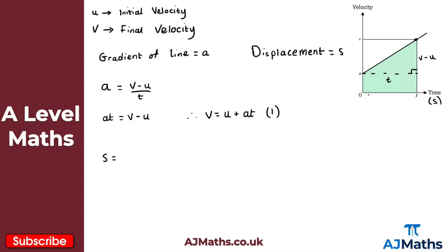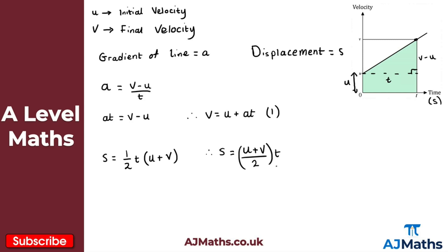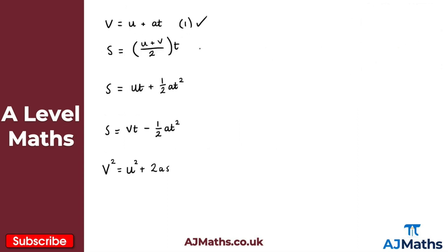The displacement s equals the area of the trapezium, which is a half times t — the base — times the sum of the parallel lengths. One parallel length is u and the other is v. So s equals a half times t times u plus v. Putting this into a more familiar form gives us equation two: s equals u plus v all over 2, multiplied by t.